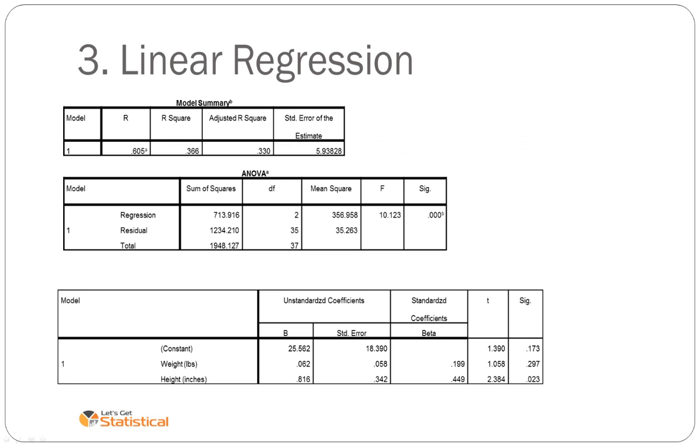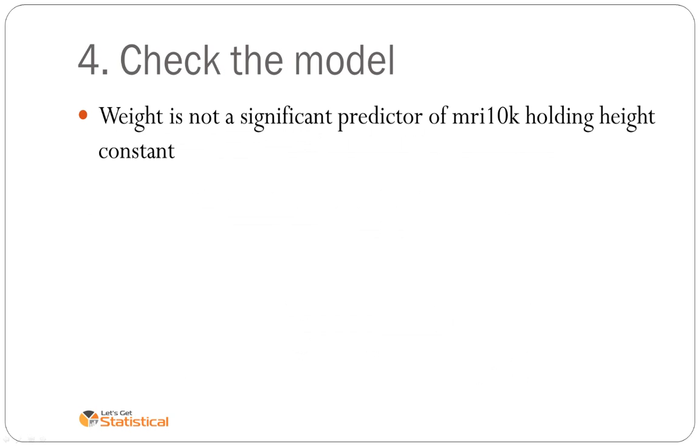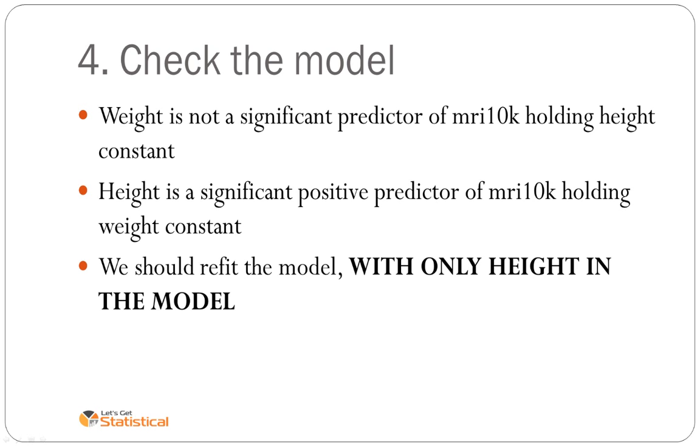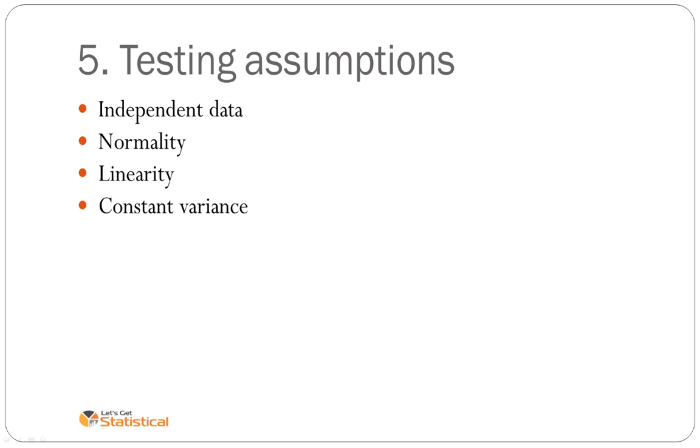So these are the three tables again. And we'll go through the next step. This time we have to check the model. So we have to look at all the predictors in the model and kick out any that aren't significant. So in this case, weight is not significant. So we went and holding height constant. But height was. So we should really ideally fit the model with only height in the model. We're not going to refit it now. But just for the purposes of this demonstration, we've got an example where we could remove it, but we're not going to.